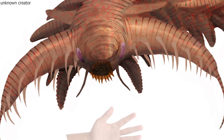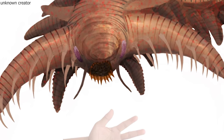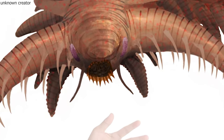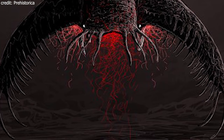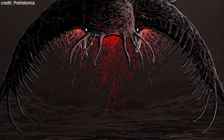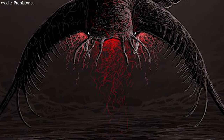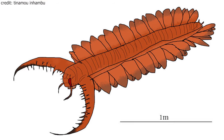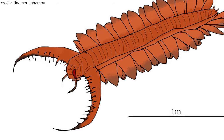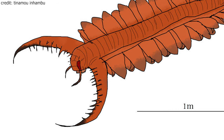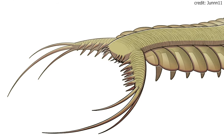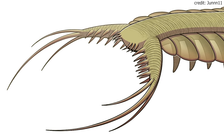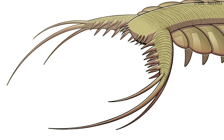Omnidens's name, 'large old tooth,' comes from fossils consisting of a series of large mouth apparatuses attached to a common stock. The mouth parts of Omnidens are about 15 centimeters or 6 inches long and consist of a row of teeth or spines. These mouth parts are arranged close together and form a kind of trapping net.